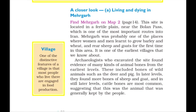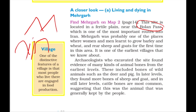Coming to the next topic: Mehergarh. This site, seen in map number 2 on page 14, is near the Bolan Pass — a passage between two mountains that makes it easier for people to travel from one side to the other. In Mehergarh, wheat, sheep, and goats were reared. A chronology of animal bones found here shows that dog and pig bones were found earliest, later sheep and goat, and lastly cattle bones — giving a semblance of chronological order.